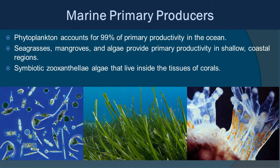You're probably pretty familiar with primary producers on land — trees, shrubs, grass, things like that. But in the ocean, 99% of the primary productivity comes from really tiny stuff: phytoplankton. In coastal regions, seagrasses, mangroves, and algae also add to productivity. In corals, there's algae called zooxanthellae that live inside the coral tissue, producing food for the coral while the coral provides shelter and nutrients to the algae. But the vast majority of ocean productivity is all that really tiny stuff — the phytoplankton.